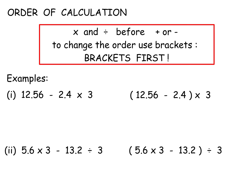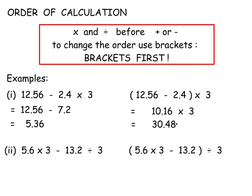Next is the order of calculation. You carry out any multiplication and division before you do any addition or subtraction. If you want to change that order, use brackets, because you do what's in the brackets first. So here you'd multiply 2.4 by 3 and then do the subtraction, doing any working at the side. Here, you do the brackets first — the subtraction in the brackets gets done, and then you multiply by 3.